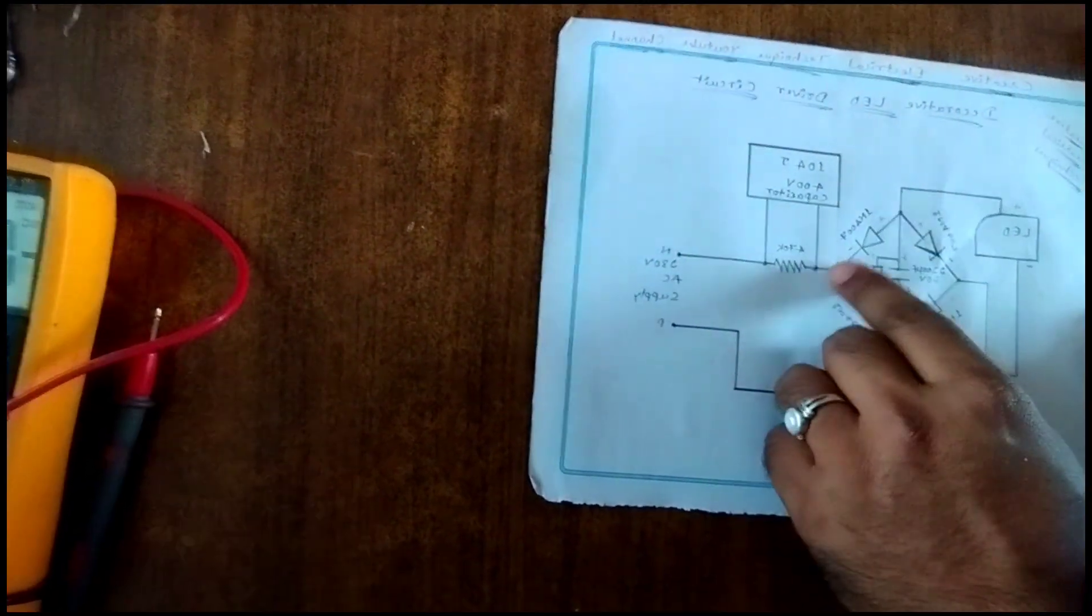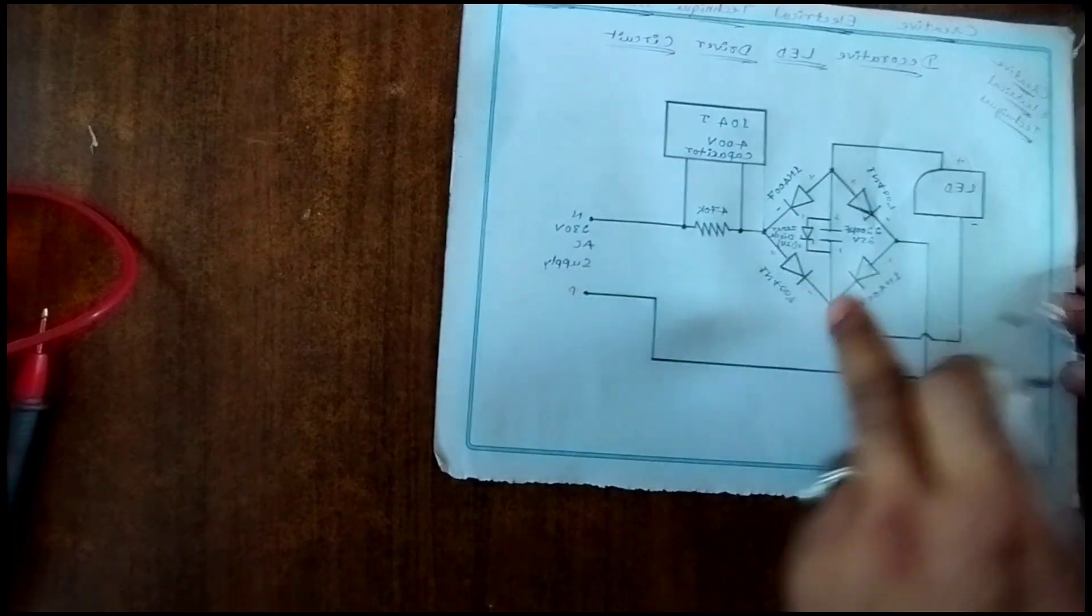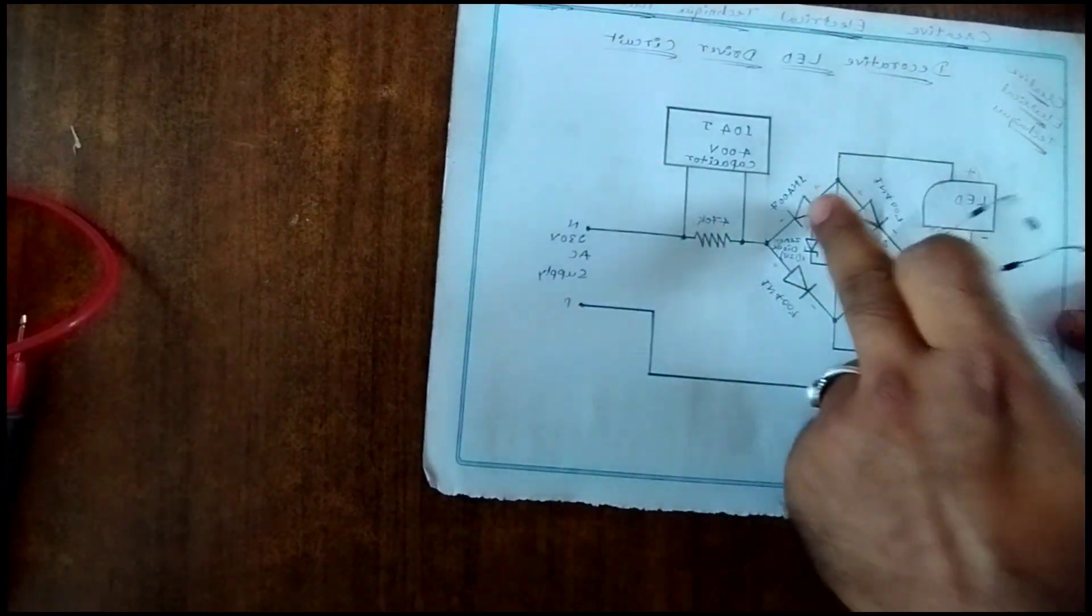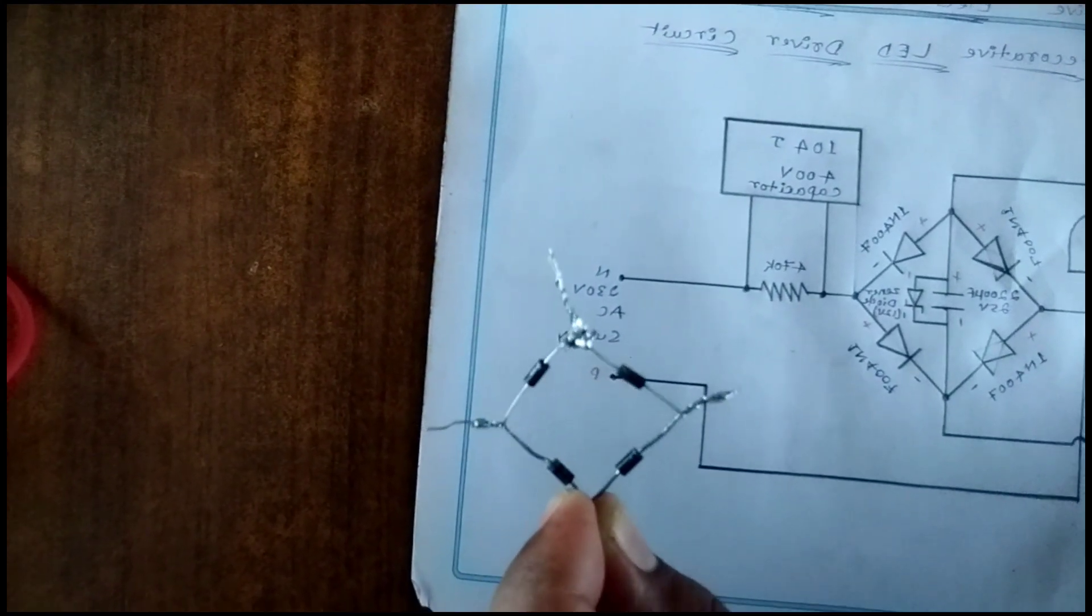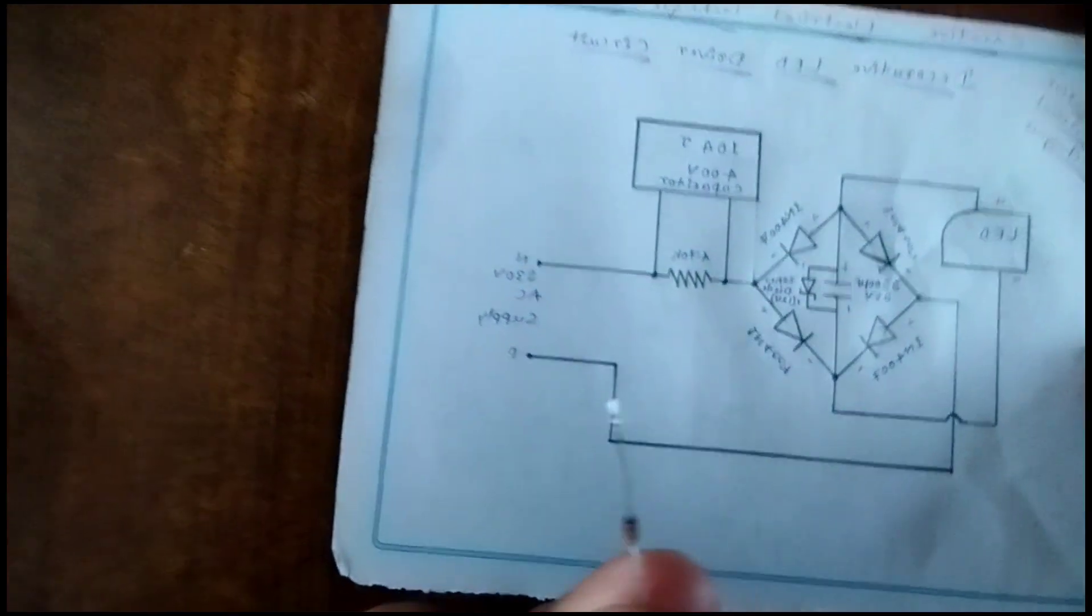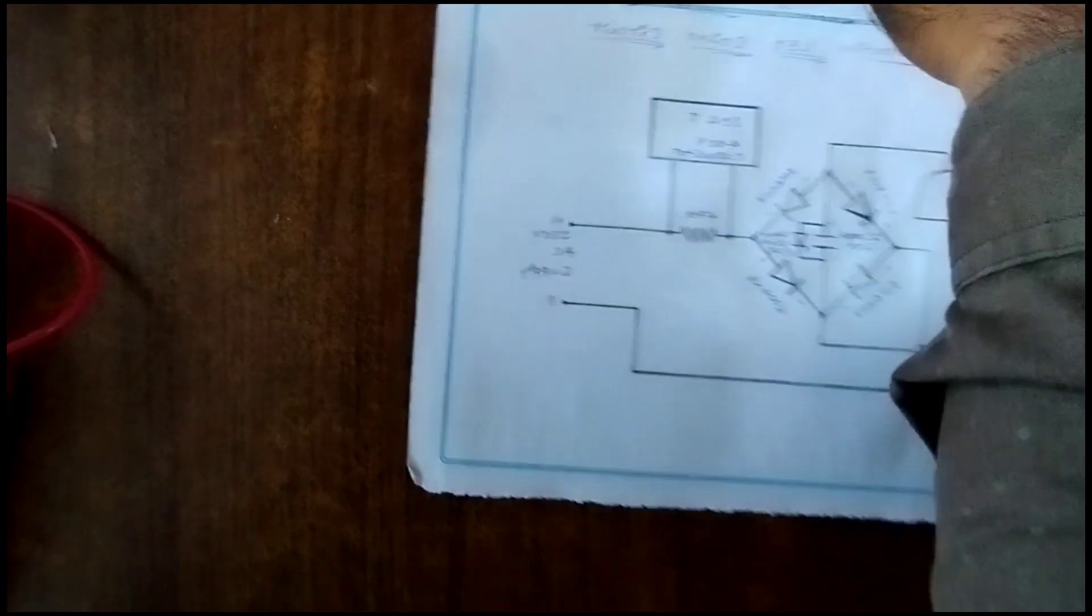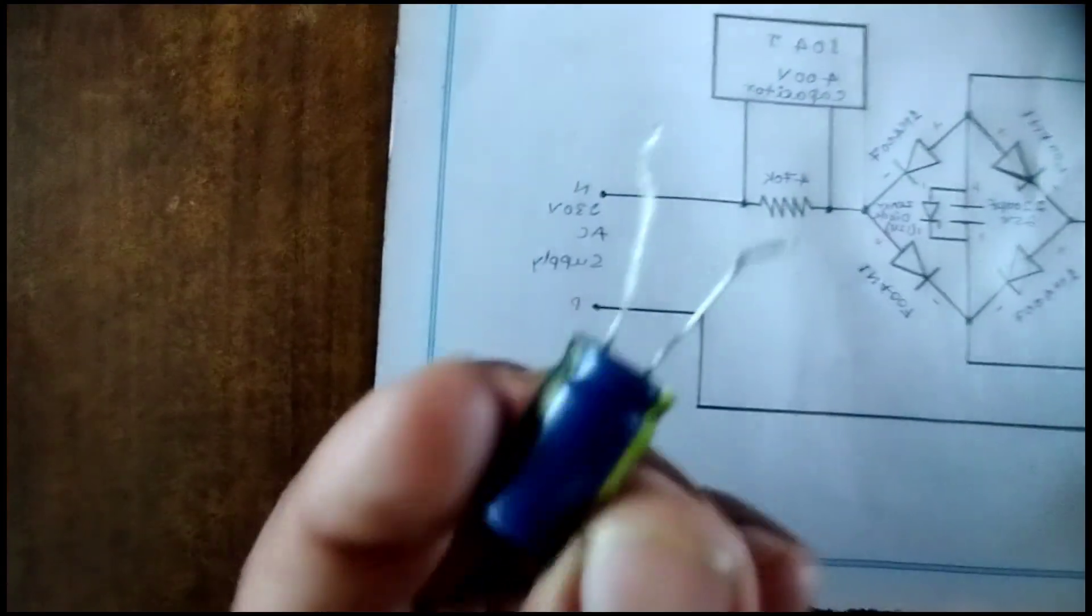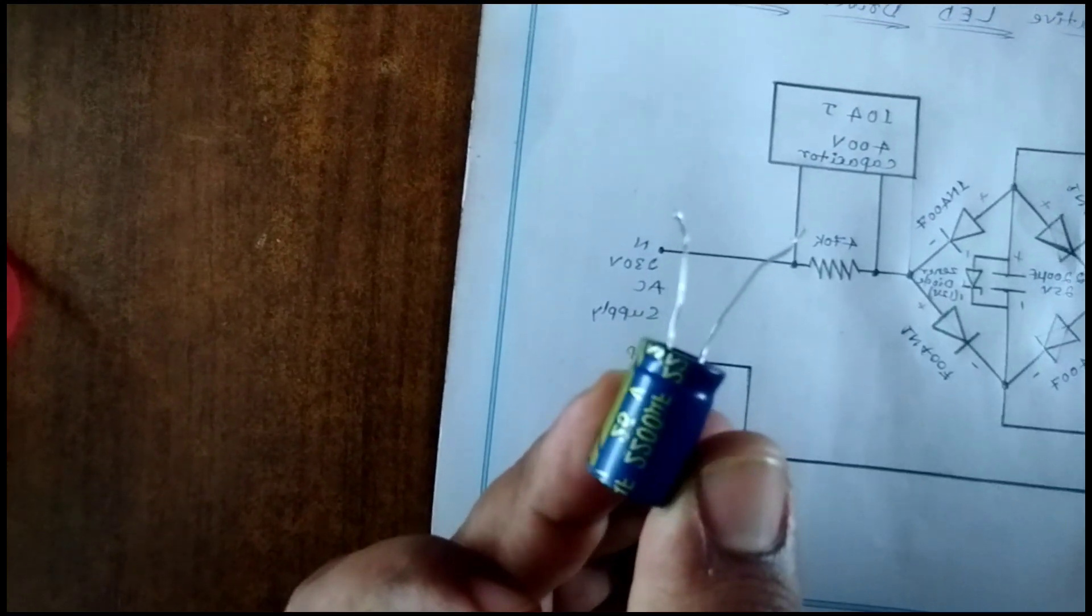Next one bridge rectifier. This is the bridge rectifier. Okay, as shown in the diagram, we connected 1N4007 diodes in bridge form. Next we want one zener diode of 12V. Next one capacitor of 2200uF 25V.